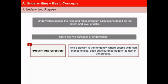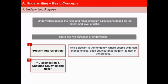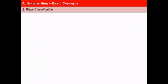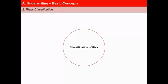And second is to classify risks and ensure equity among risks. The term equity means that applicants who are exposed to a similar degree of risks must be placed in the same premium class. Life insurers use a mortality table to determine the premiums to be charged. To assure equity, the underwriter engages in a process known as risk classification — individual lives are categorized and assigned to different risk classes depending on the degree of risks they pose.